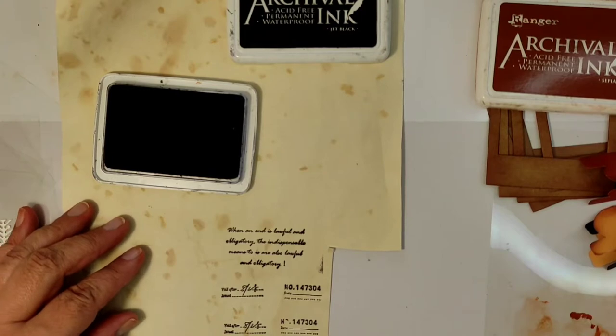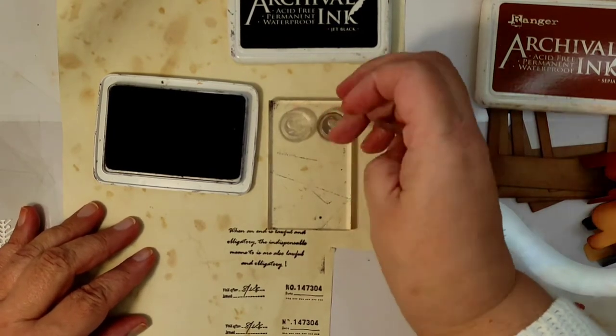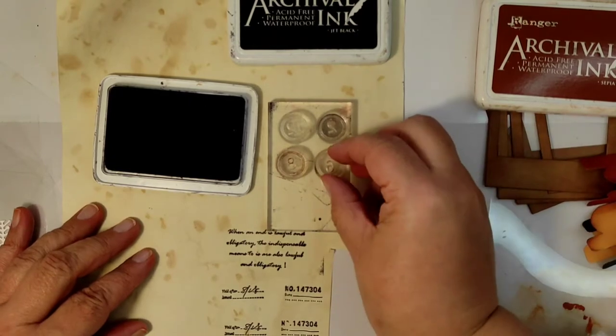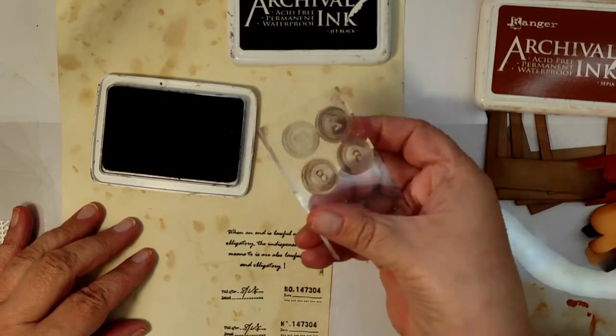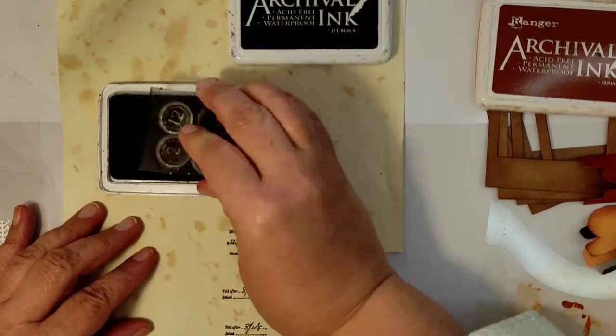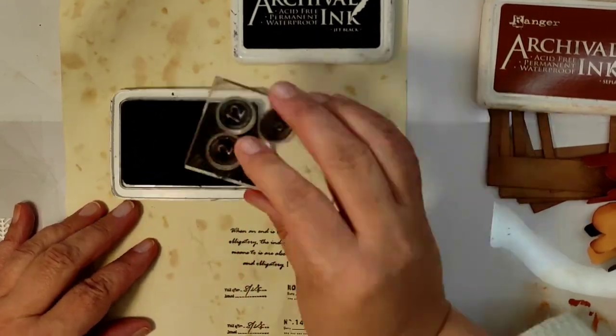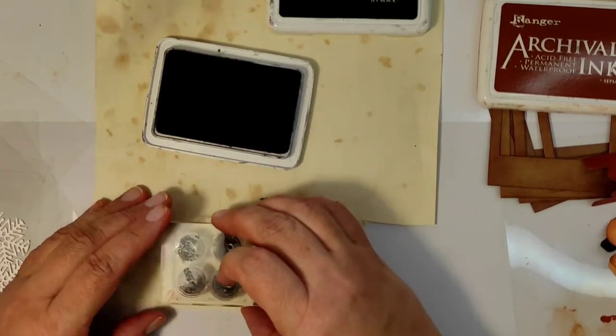I'm using some label stamps but they do not need to be label stamps always. It can be simply a small text stamp for example. And I'm also stamping numbers which will go on the tabs. And this time I'm using black archival ink.